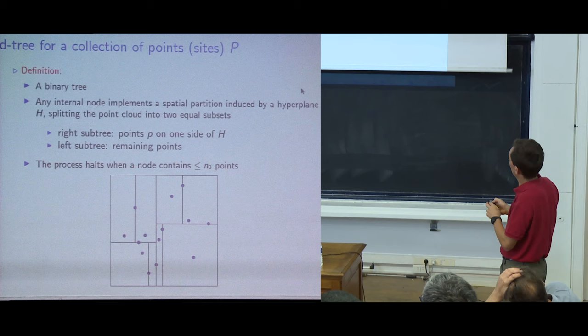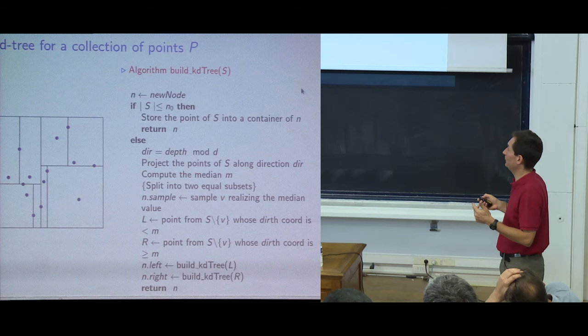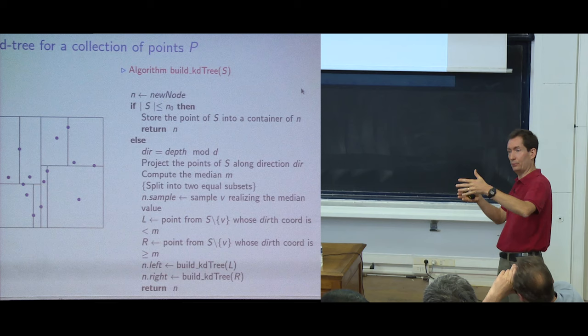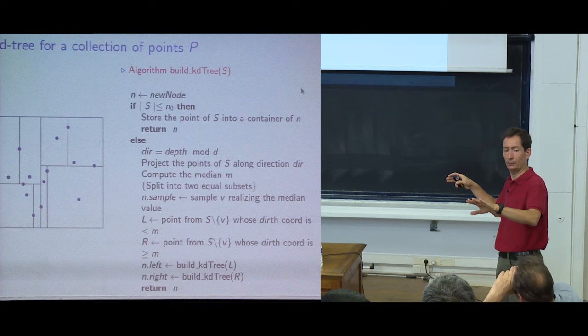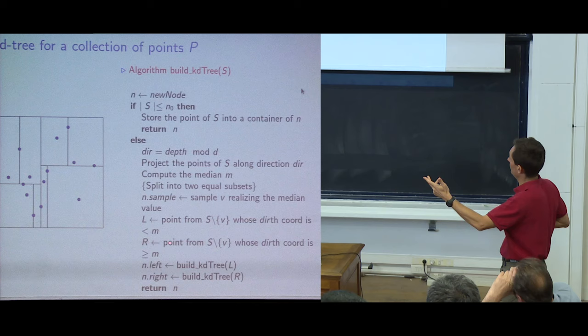More precisely: choose a direction (iterating through axes or choosing max-variance direction), project points onto it, compute the median, assign the median point to that node, assign remaining points left or right, then recursively build subtrees. That's the KD tree construction.